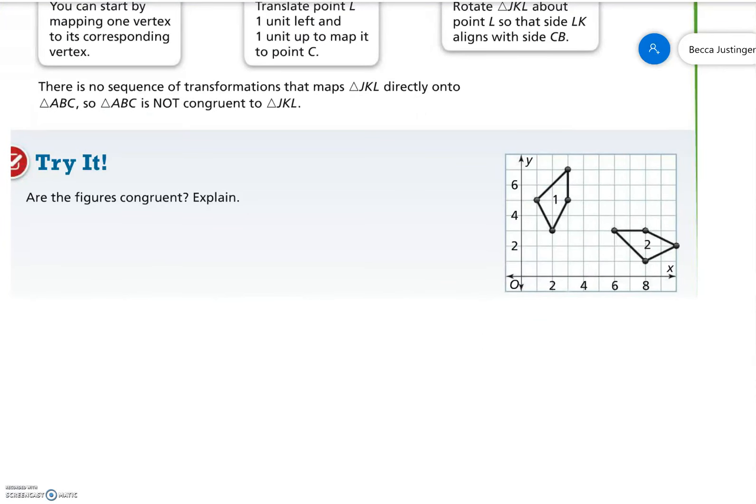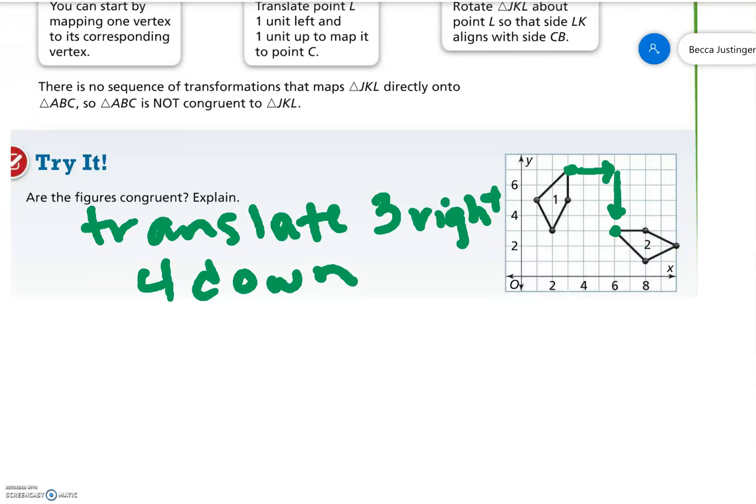Are these figures congruent? Explain. Well, I can see that the top of this should be on the top of that. So I am going to translate three to the right and four down. Let me write down what I do. Translate three right and four down. When I do that, my new figure is going to look like this. There, down two, over two. Okay. So just copy the figure.